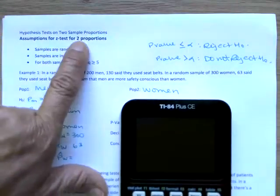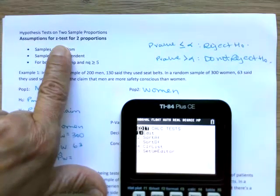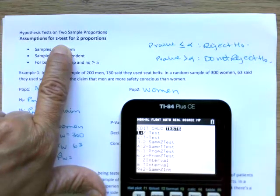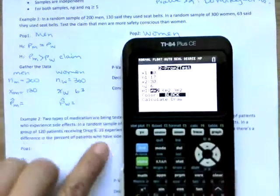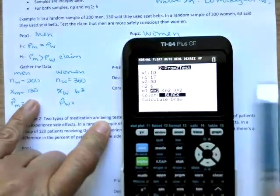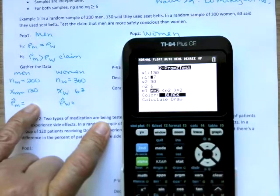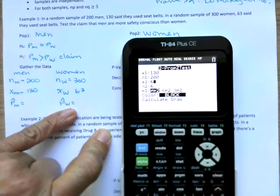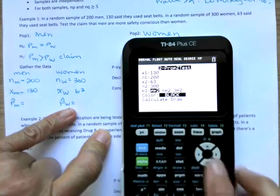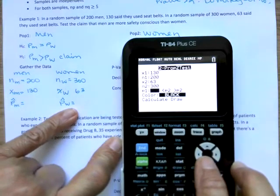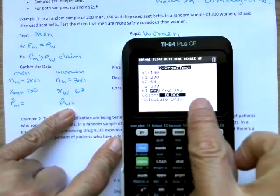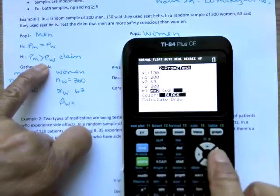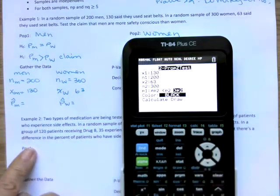Now we have two proportions. Two proportions are a z-test. So stat tests, two proportions z-test, item six. We need to tell it X sub 1 and N sub 1. They're in a different order than I wrote them down, so go ahead and get yours in the right order. If you get them in the wrong order, don't worry, your calculator will yell at you. Here's where we put in our alternative hypothesis. So P sub 1 is greater than P sub 2 - men greater than women. And enter.